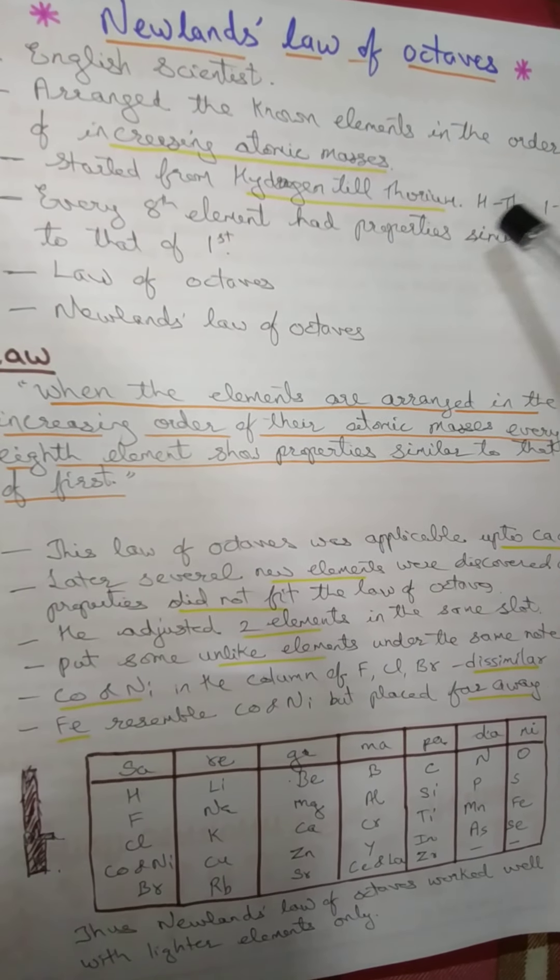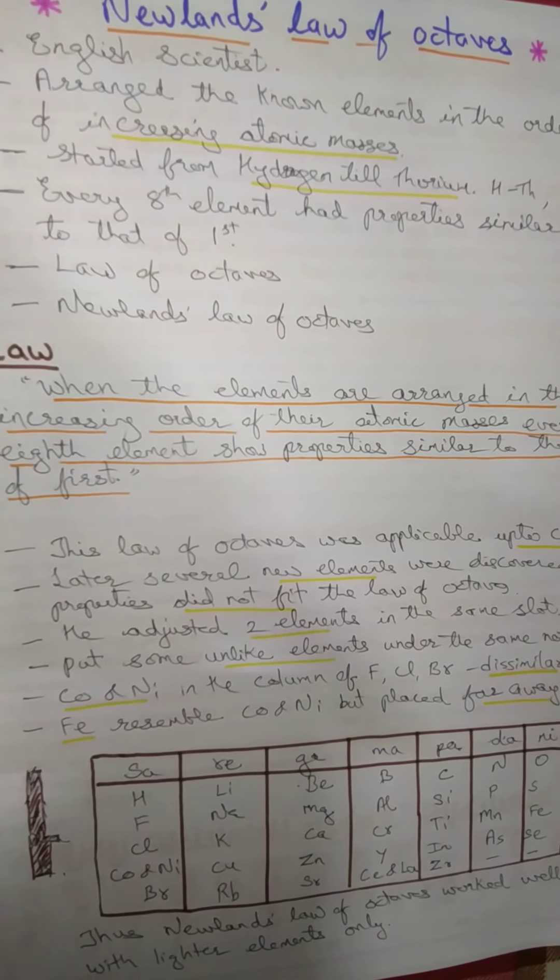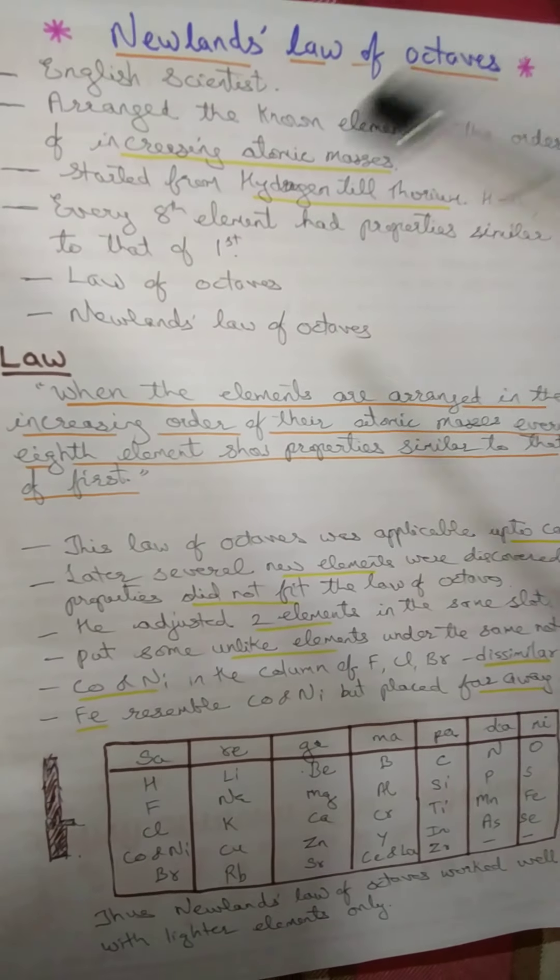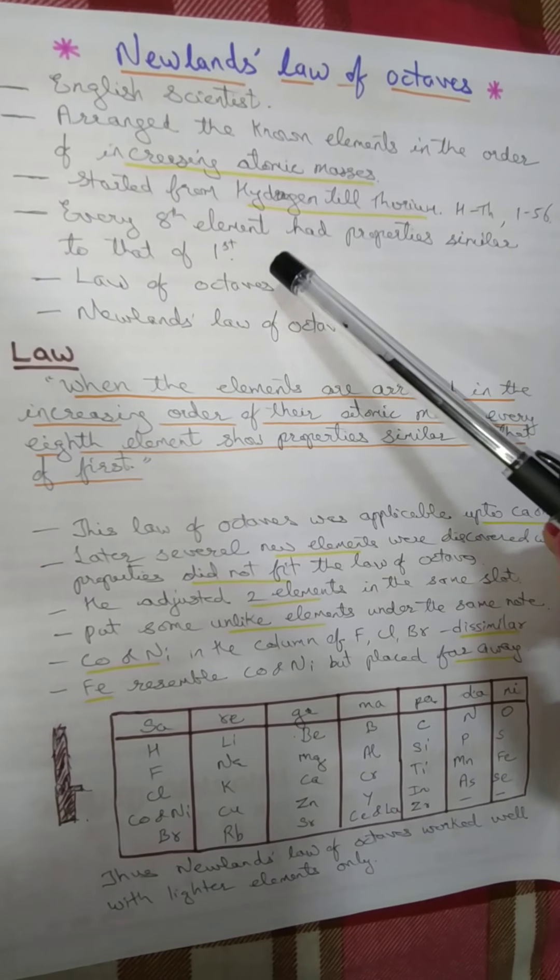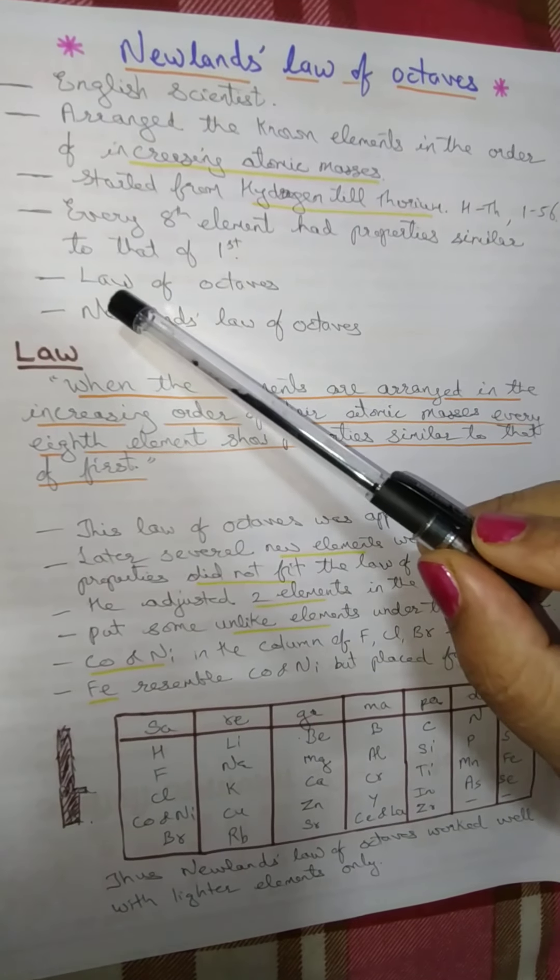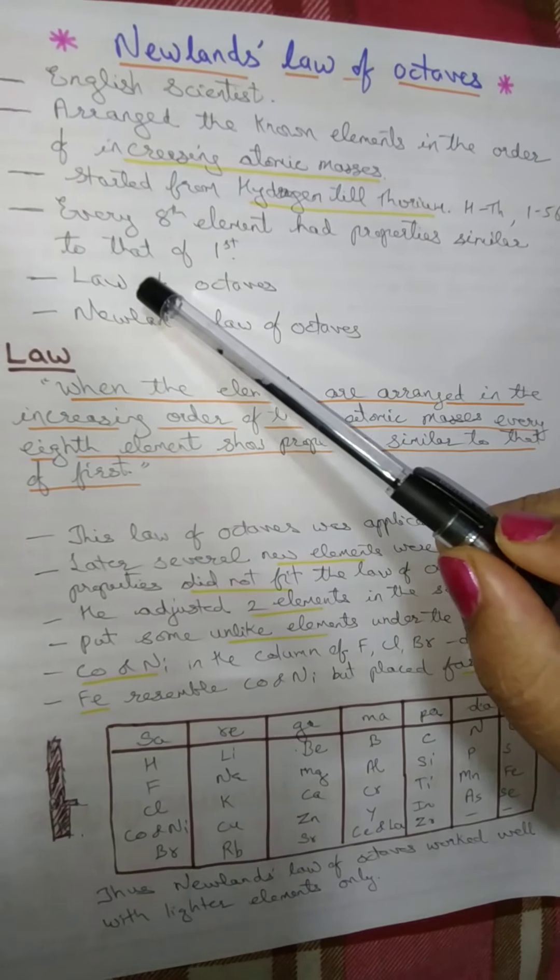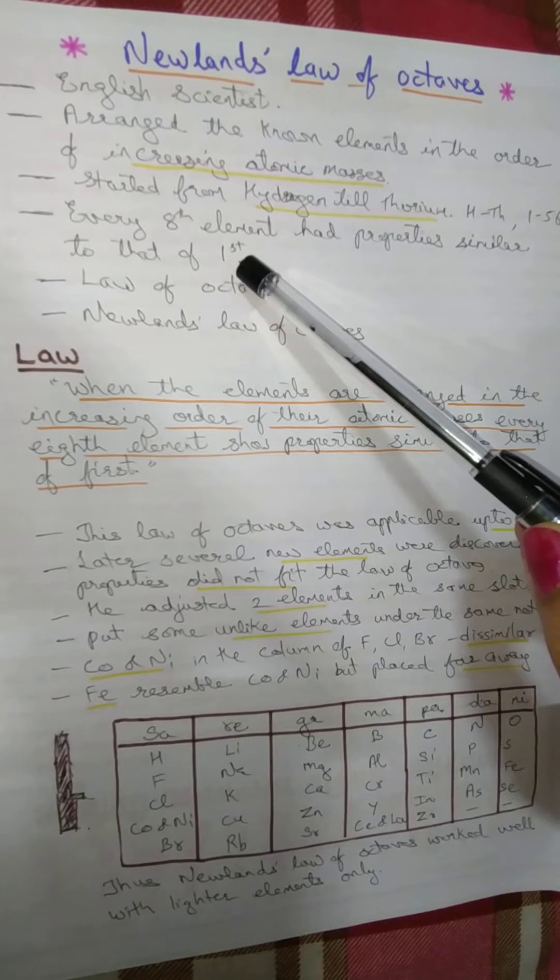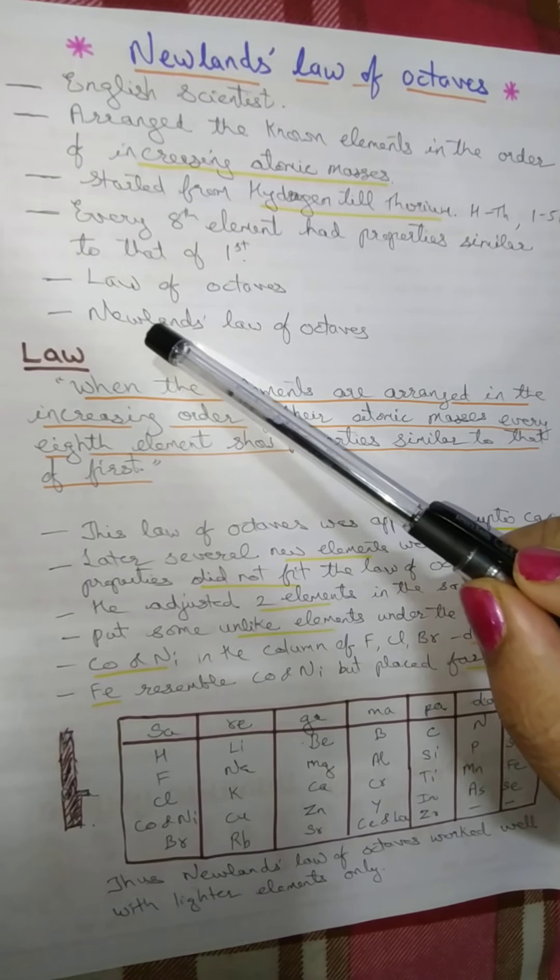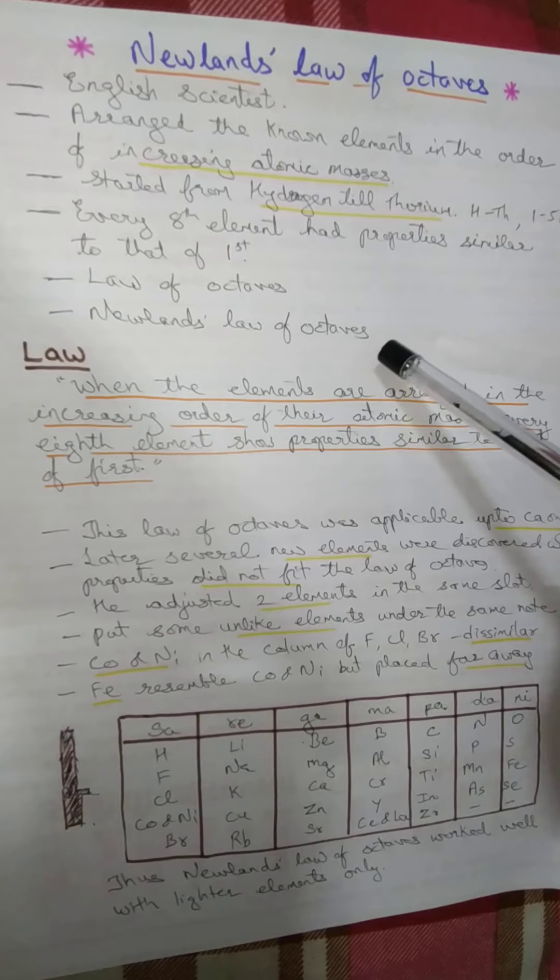Hydrogen atomic number is 1 and thorium atomic number is 56. He found that every 8th element had properties similar to that of first, and then he formulated a law and that was called as law of octaves, because the 8th element showed similar properties to that of first, and hence it is called as Newland's law of octaves.